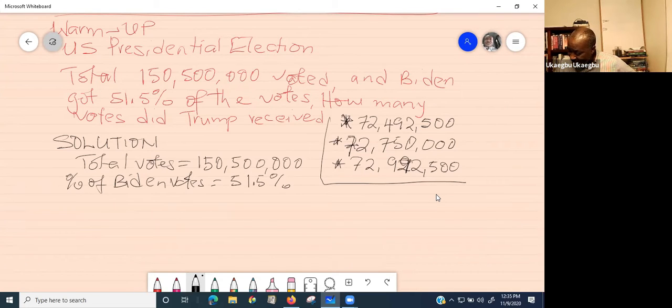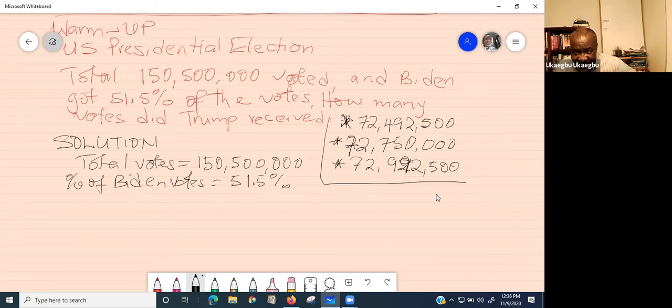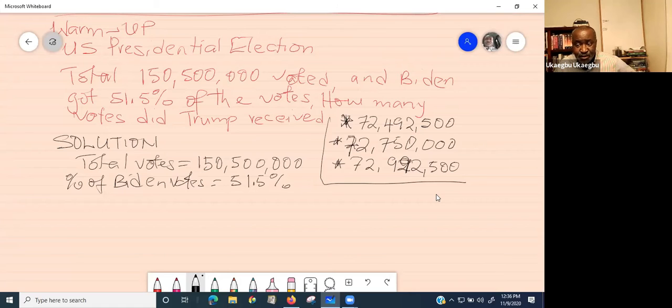The first thing we need to know is what is the number of votes equivalent to 51.5%. What does percent mean? Percent means per hundred. So every hundred, you count a portion of it. So we say 51.5 divided by 100, then multiply by the total number, which is 150,500,000.